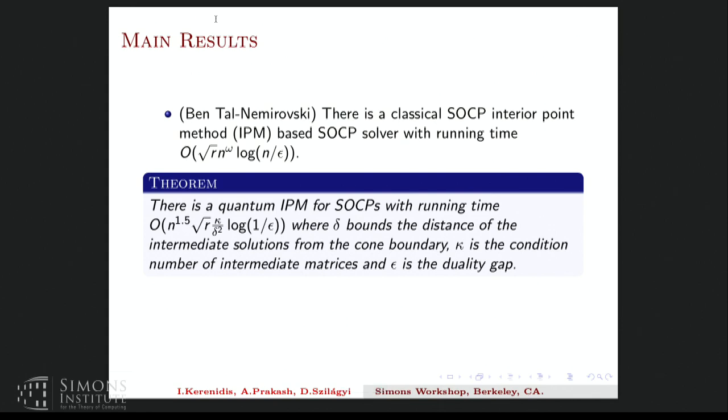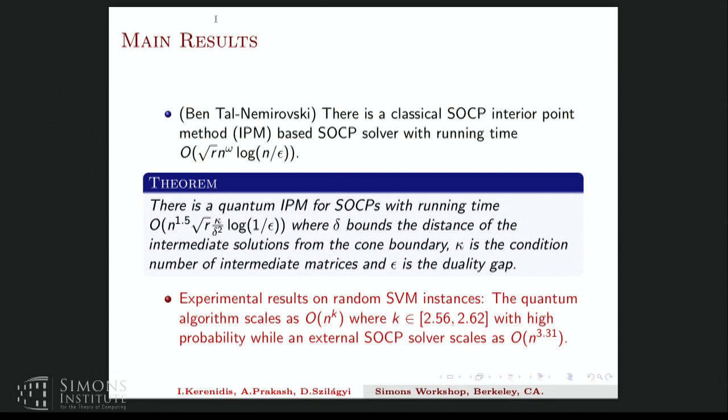So in this work, we develop a quantum interior point method for SOCPs. And the running time of this quantum IPM is N^1.5 square root R plus some other quantum specific factors, which are the condition number and the distance of the intermediate solutions from the cone boundary, which I write as κ over δ squared times log one over epsilon. And apart from this theoretical result, we have some experimental results on random SVM instances. So I'll define what these random instances are later.